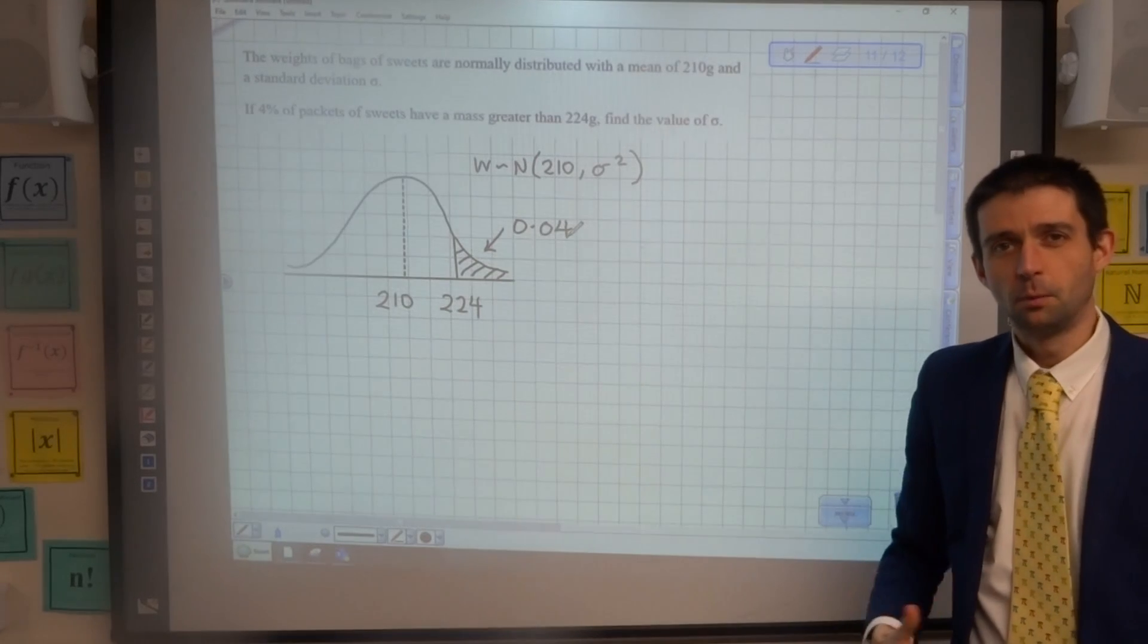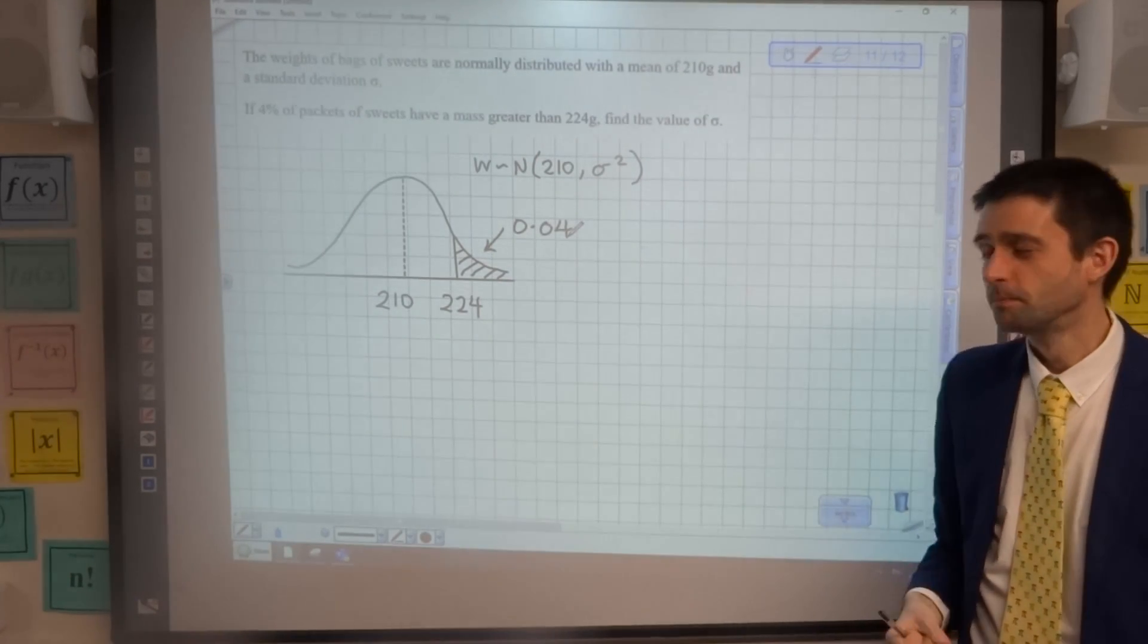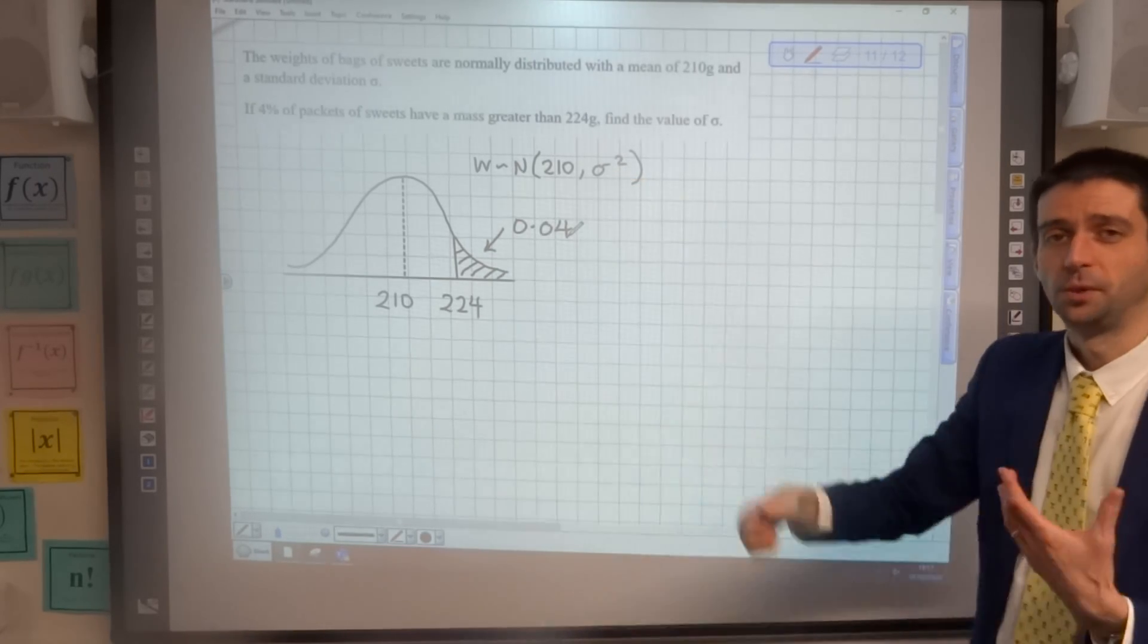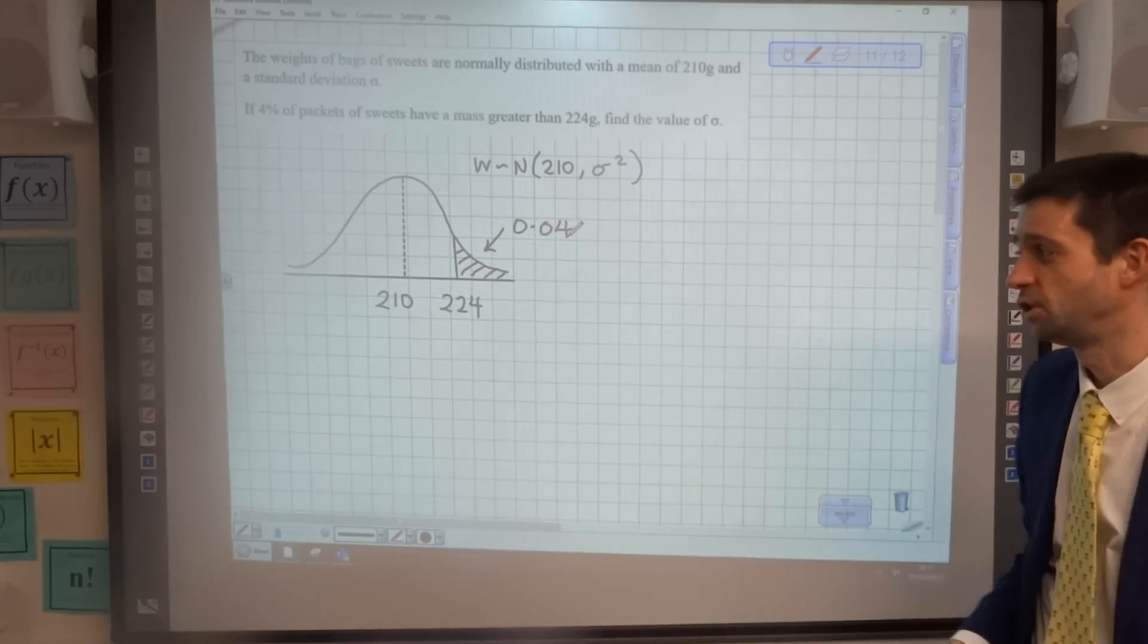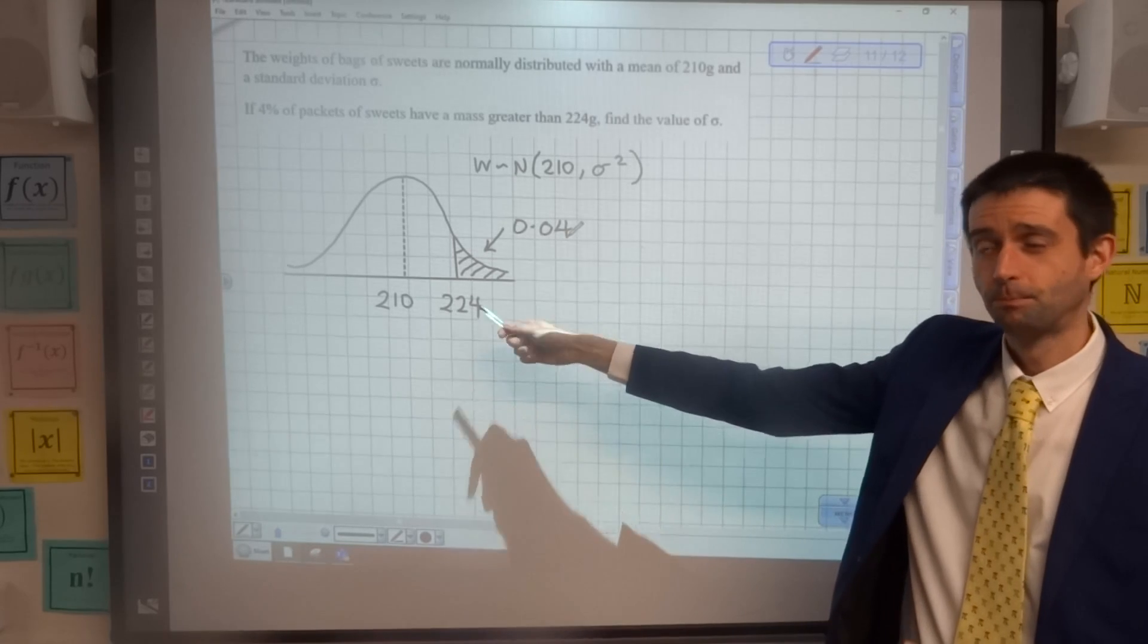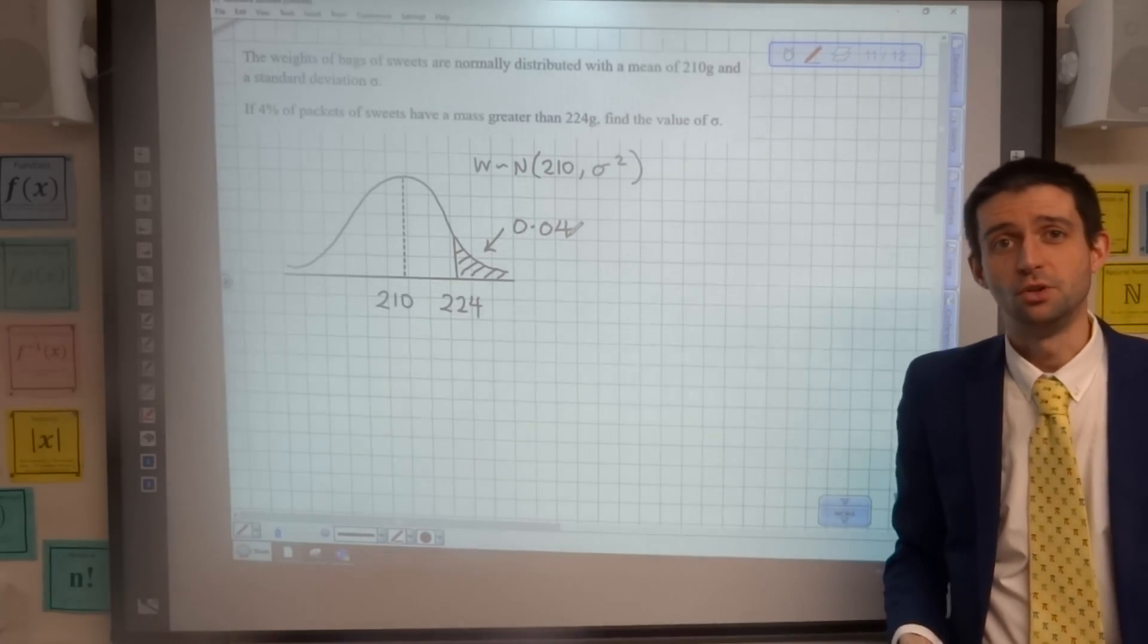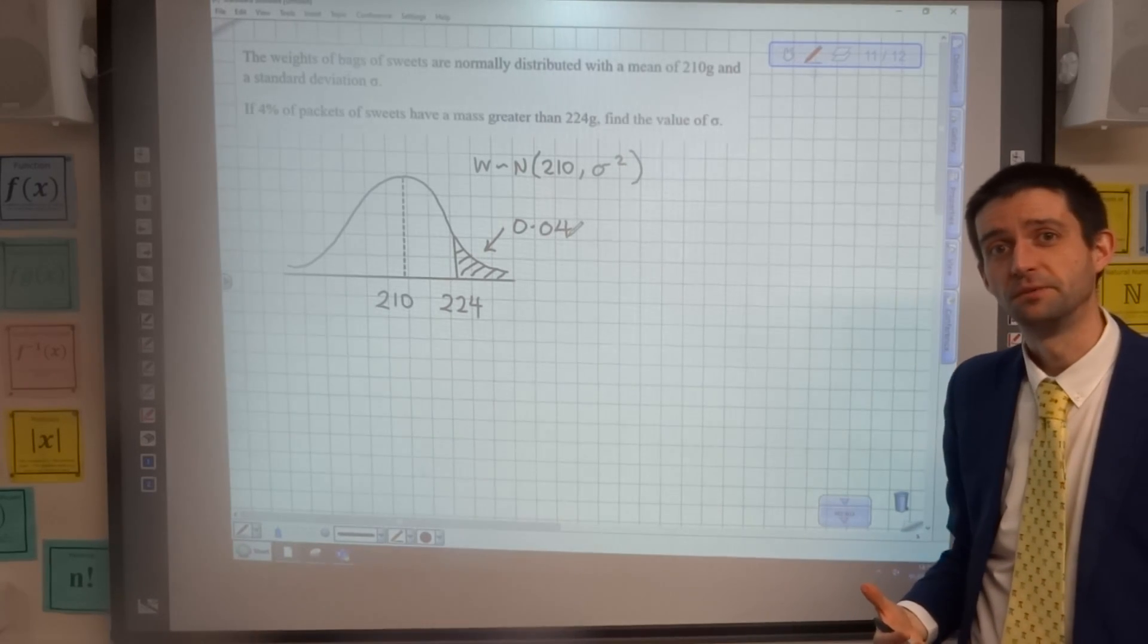Previously when we knew the area, we could use the inverse normal function. The problem with that now is that we don't know what the standard deviation is. So we can't tell the calculator the standard deviation. But we do know the value. So this is a situation where we have to go to the standardised normal distribution, Z, which I talked about in the first video.